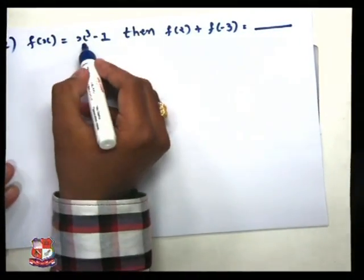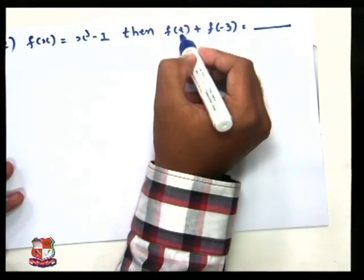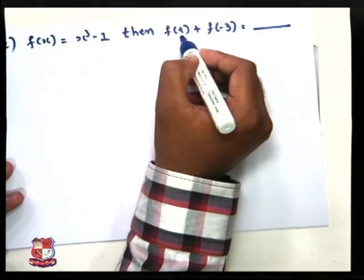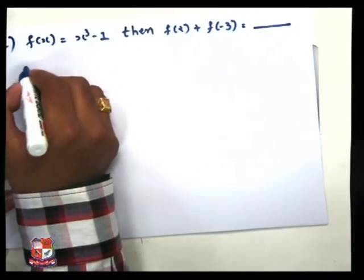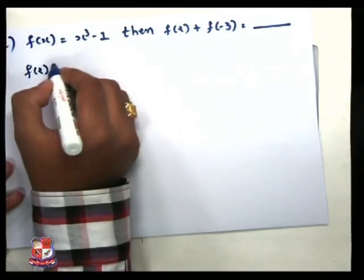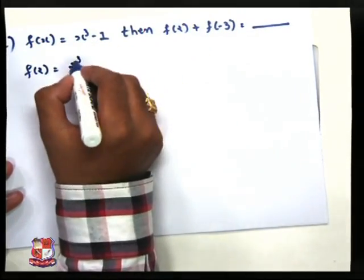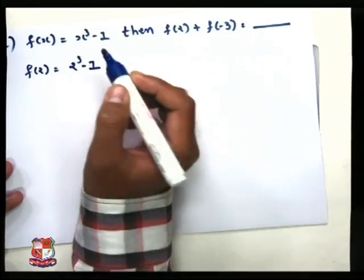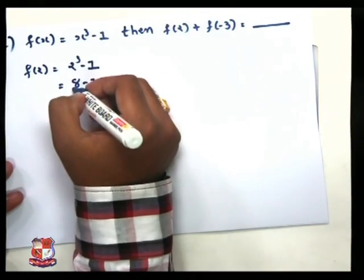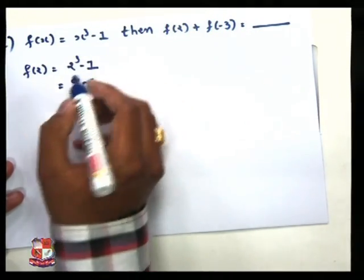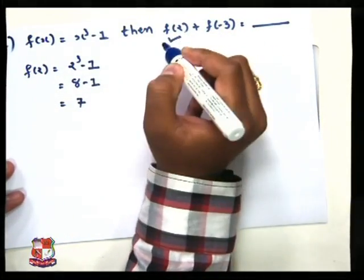This is our main function x cubed minus 1, and we want to find out the value of f of 2. That is nothing but replacing x by 2. So the first step: f of 2 is equal to 2 cubed minus 1, which is 8 minus 1. Since 2 cubed is 8, that equals 7.